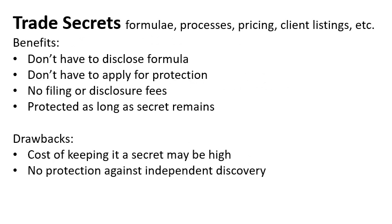Trade secrets are another form of IP. Trade secrets are anything that a business uses to obtain a competitive advantage — sometimes proprietary techniques, materials, formulas, client lists, etc. The formula for Coca-Cola, invented in 1886, is a trade secret. If Coca-Cola had relied upon copyright or patent protection, the protection would have expired years ago. Also, to protect a patent, the formula has to be disclosed in the patent filing. It's also worth noting that prospective employees often have to sign a non-compete and non-disclosure agreement, which is meant to protect the employer's trade secrets and other proprietary IP — often the case with client listings.